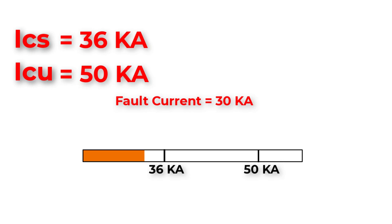But if the fault is equal to 45 kilo-amperes, for example, this fault current is above ICS and below ICU, so the breaker will handle this situation and will trip without any rupture, but we will have to replace this breaker.